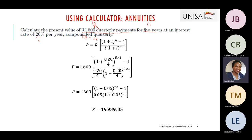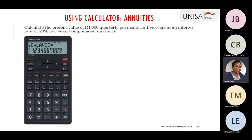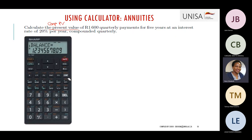If you have a financial calculator, you can do the same by following the steps. First, identify what the question is asking: compute PV. The functions are the same — we'll still use the first-line function, ENT, plus or minus, mode, on/off, and second function. We are computing the present value, so that's what we need: compute PV.